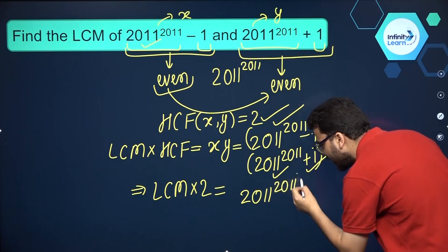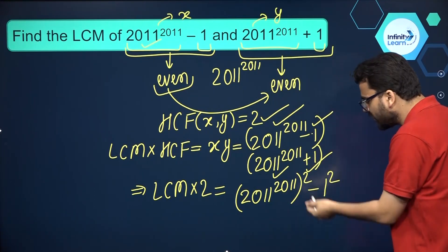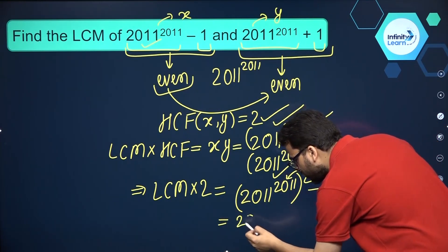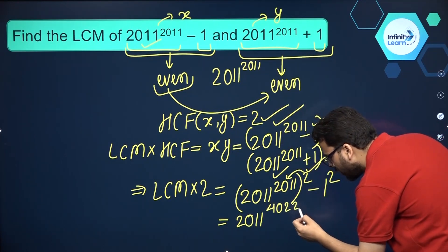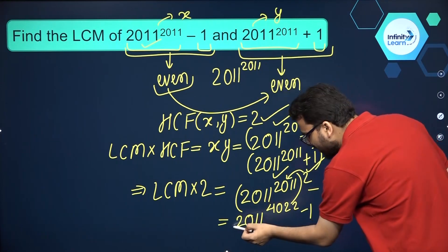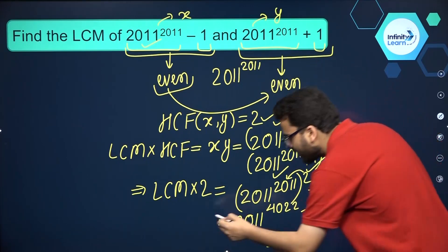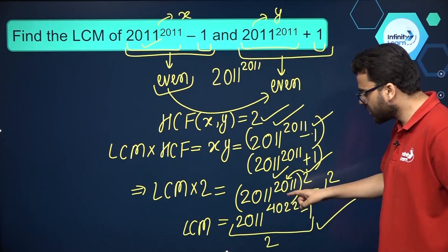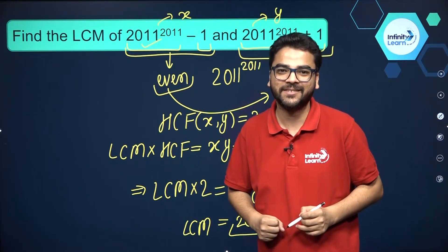That is 2011 raised to the power 2011 the whole raised to the power 2, minus 1 squared. Using the laws of exponents, this gives us 2011 raised to the power 4022 minus 1, since 2011 times 2 is 4022. This is the product of the HCF and LCM. Dividing it by 2, the LCM of these two numbers is (2011^4022 minus 1) divided by 2. That is the solution to this question. Thank you.